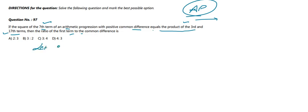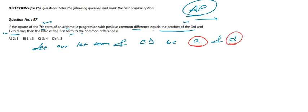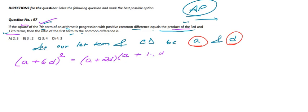Let the first term be a and the common difference be d. The seventh term is a + 6d, the third term is a + 2d, and the 17th term is a + 16d. The condition gives us: (a + 6d)² = (a + 2d)(a + 16d).